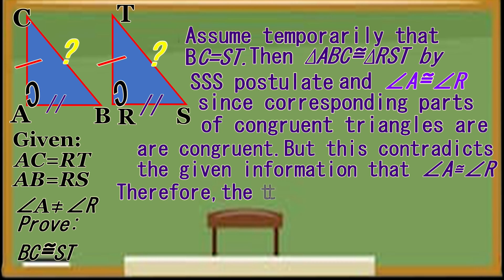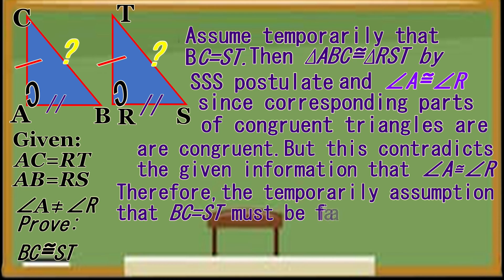But this contradicts the given information that angle A is not congruent to angle R. Therefore, the temporary assumption that BC equals ES must be false. It follows that BC is not congruent to ES.